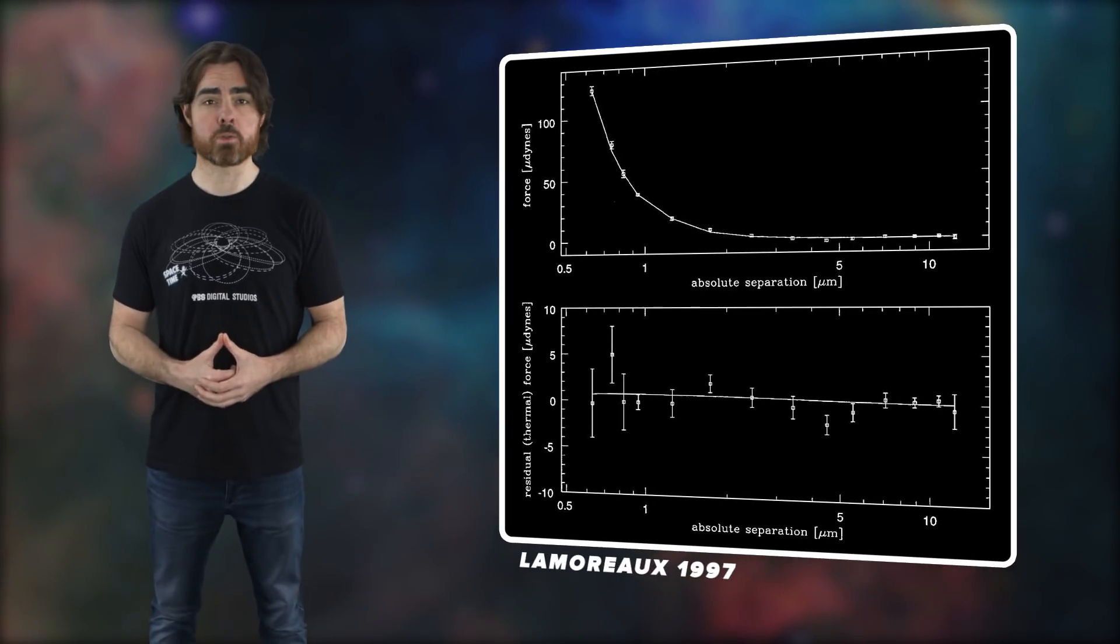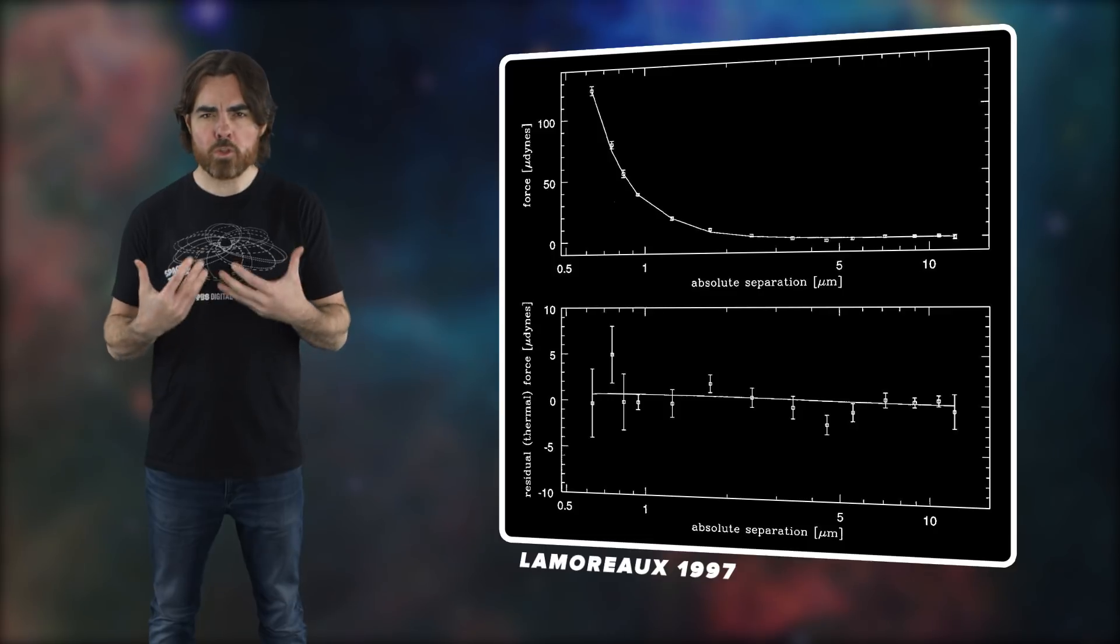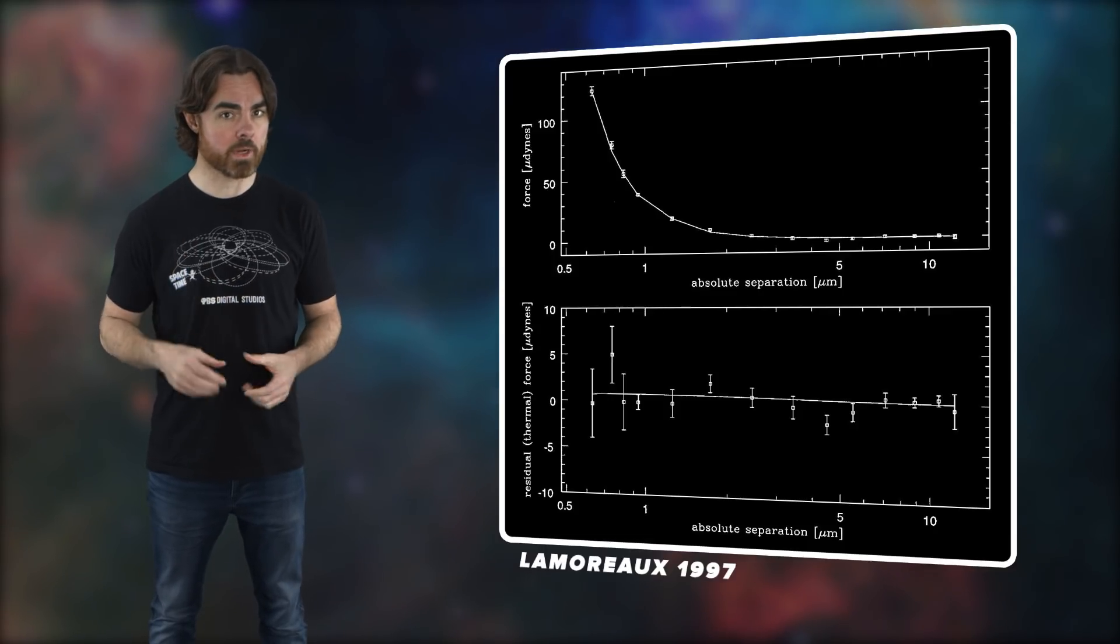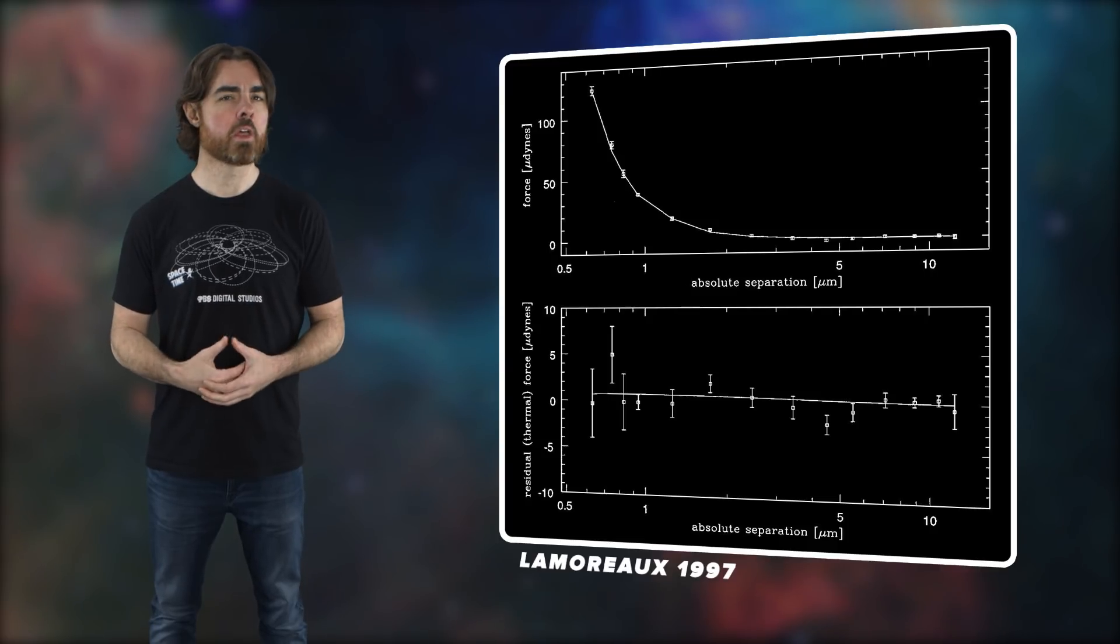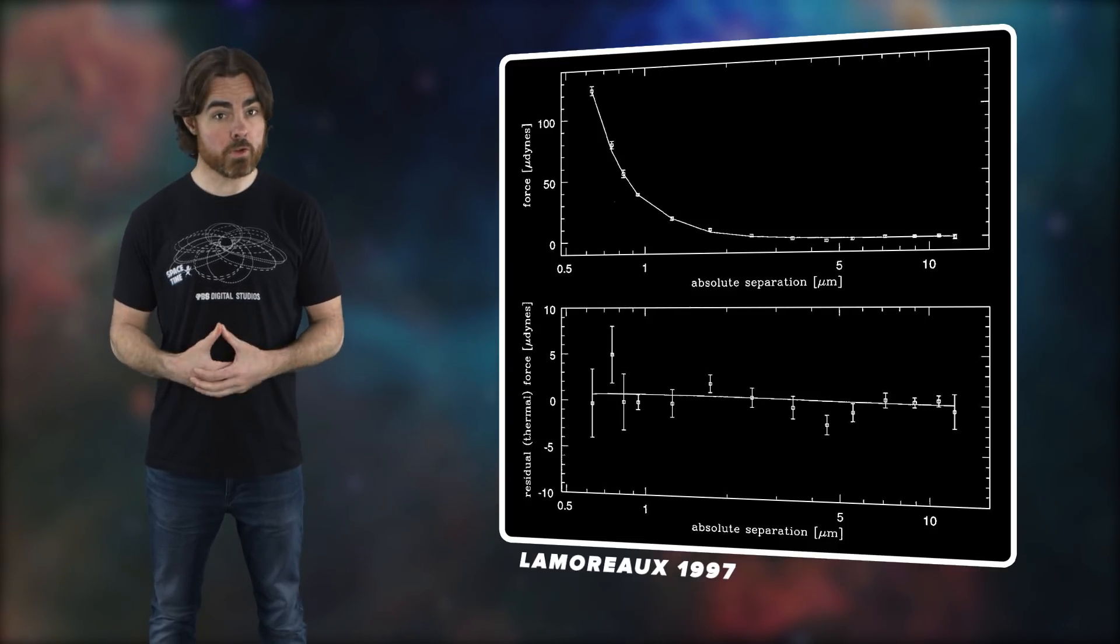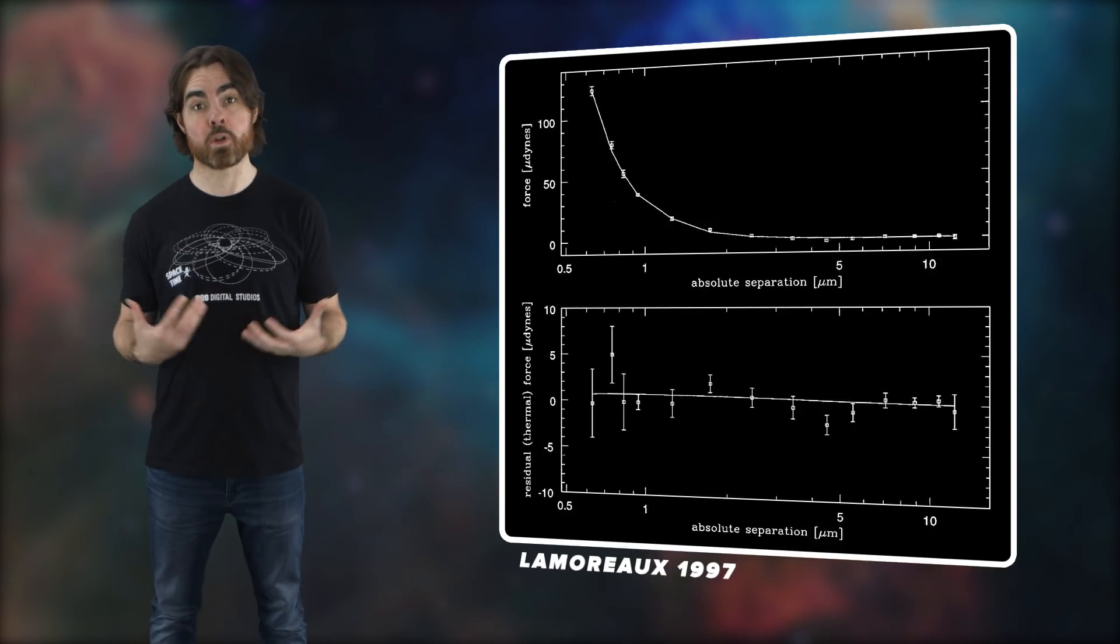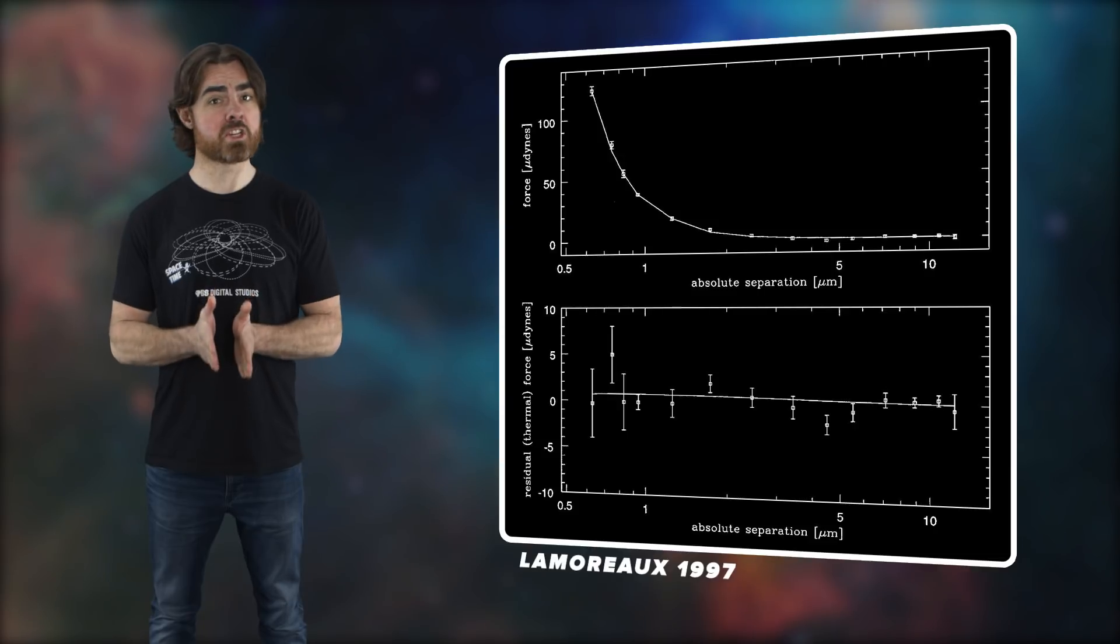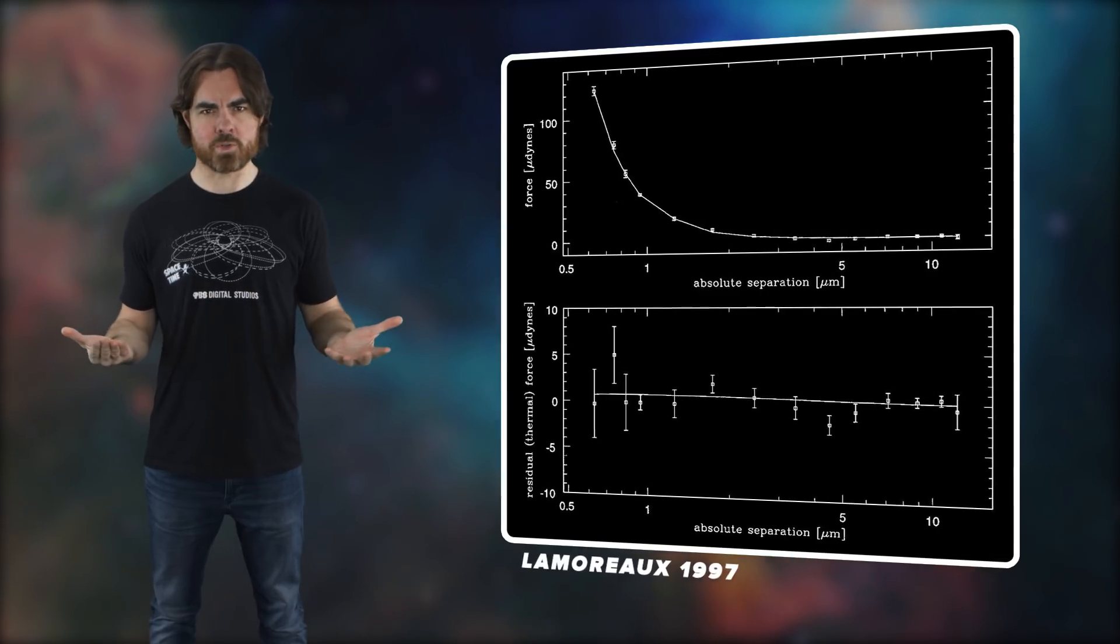Also, the first successful Casimir experiment saw the force emerge when the plates were separated by around one micrometer, a hundred times smaller than our 0.1 millimeter cutoff. That proves the existence of virtual photons with wavelengths smaller than the plate separation. Also, without a very short-range Casimir force, geckos would fall off walls.